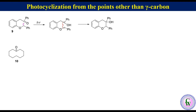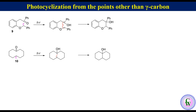In this example we will learn the proximity effect. It has beta, gamma, delta, and epsilon hydrogens, but the epsilon hydrogen gets abstracted because in major conformations it is close to the carbonyl oxygen. Thus, upon irradiation, abstraction of the epsilon hydrogen gives a 1,6-diradical which after cyclization gives bicyclo[4.4.0]decan-1-ol.